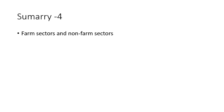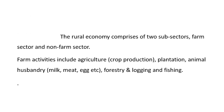We discussed about the farm sectors and the non-farm sectors in India. Farm sectors include agriculture — that is production of crops such as sugar, wheat, sugarcane, ragi, maize and millet — as well as plantation, animal husbandry, milk, meat, forestry and fishing. All these are activities happening in the rural sector within the farm sectors.